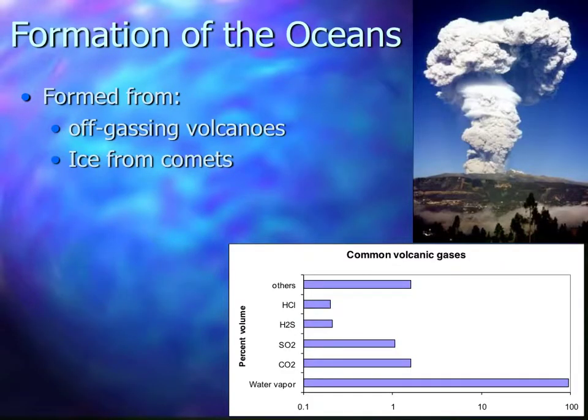A little bit about the formation of the oceans. First, where did the water come from? Two main sources of water to the main ideas. The first one being off-gassing from volcanoes. So the gas shooting out of volcanoes. And if you look down here, you can see all the stuff that's in volcanic gases. Hydrochloric acid, hydrogen sulfide, sulfur dioxide, carbon dioxide.